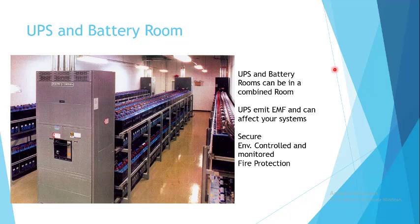UPS and battery room. UPS is nothing but uninterrupted power supply — the power never interrupts, it never fluctuates. In case power from your main grid fails and the generator takes over, it takes around a minute for the generator to start. In that one minute of glitch, your UPS makes sure that the power is not lost. UPS has a battery backup to provide the necessary power, and UPS and batteries can be combined in one room or kept separate. UPS emits a lot of electromagnetic waves that can affect your computers, so it is always kept away from your server room.